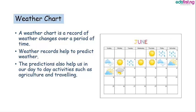You notice that on the first day of June, it was sunny. On the second day being Friday, it was rainy. So, the record is kept like that till the end of the month. Then one will be able to determine what the weather for that month was like based on the predominant weather condition.